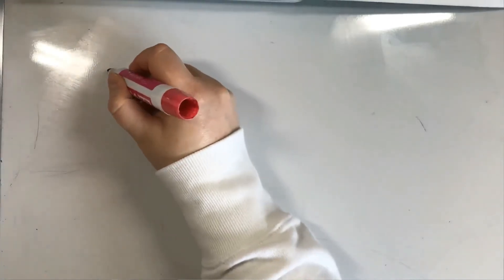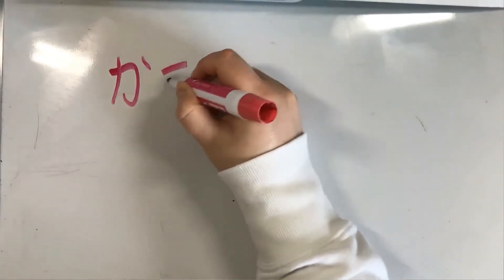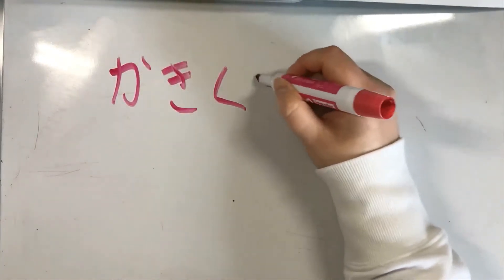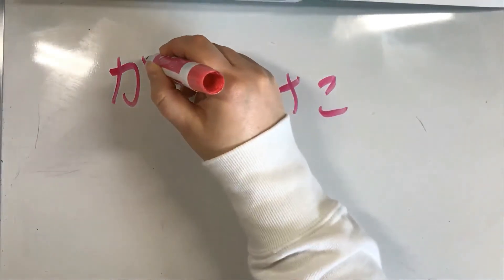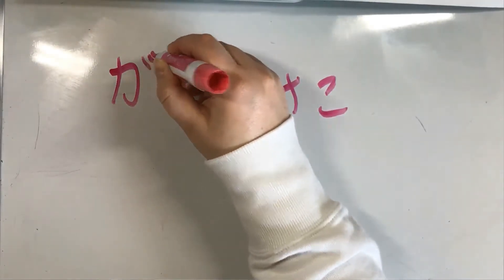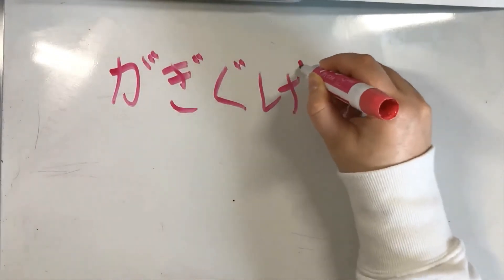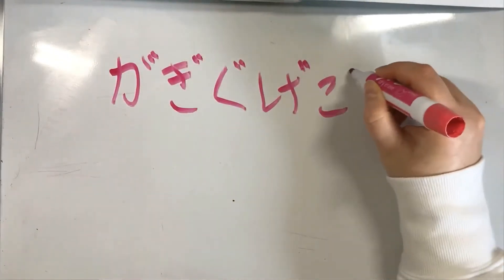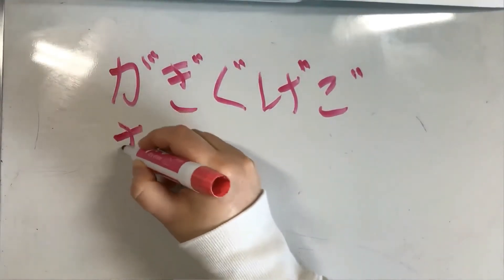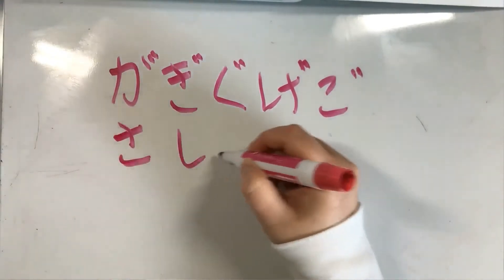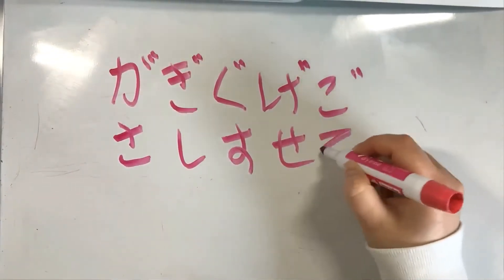For example, when we did hiragana we had ka, ki, ku, ke, ko. And when we added the quotes it became ga, gi, gu, ge, go. And when we did sa, shi, su, se, so, it became za, ji, zu, ze, zo.